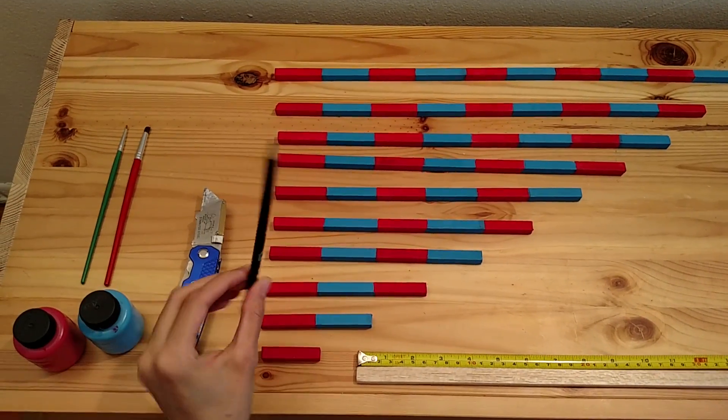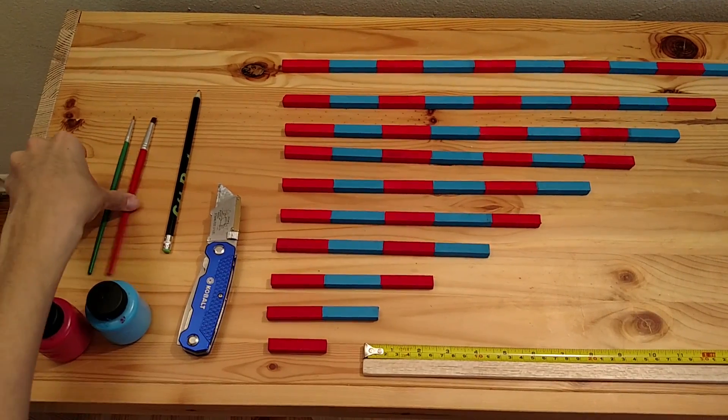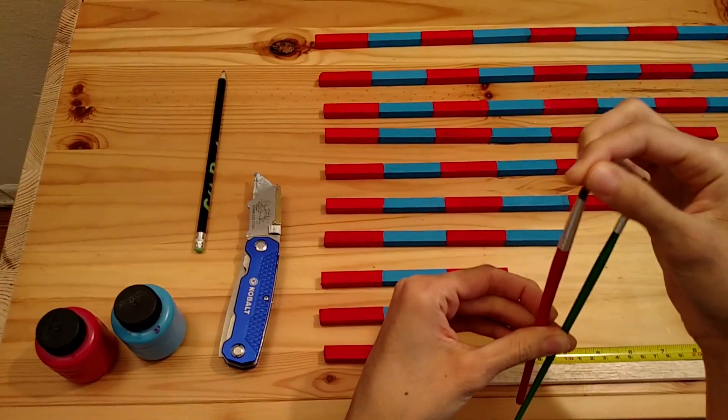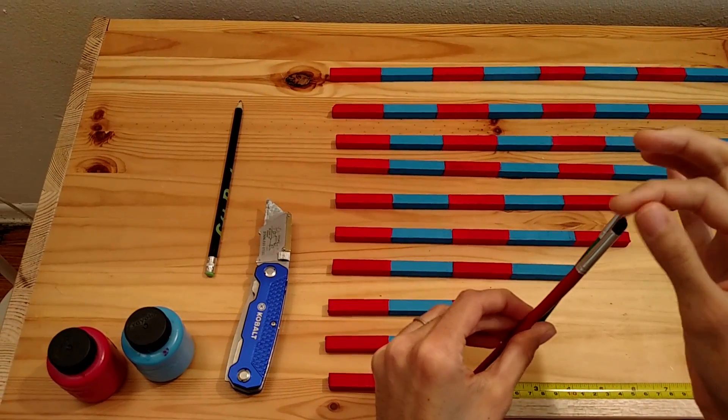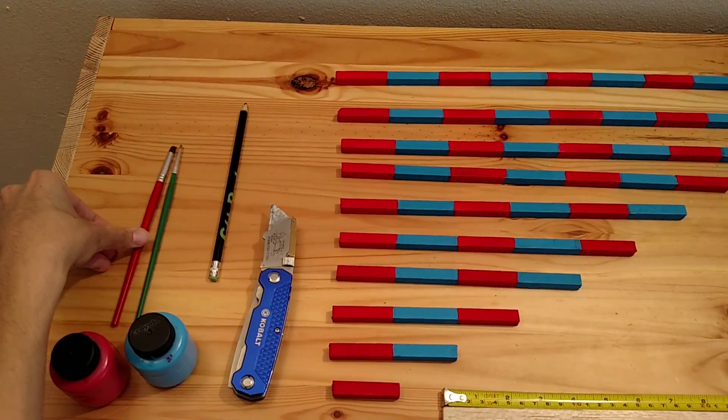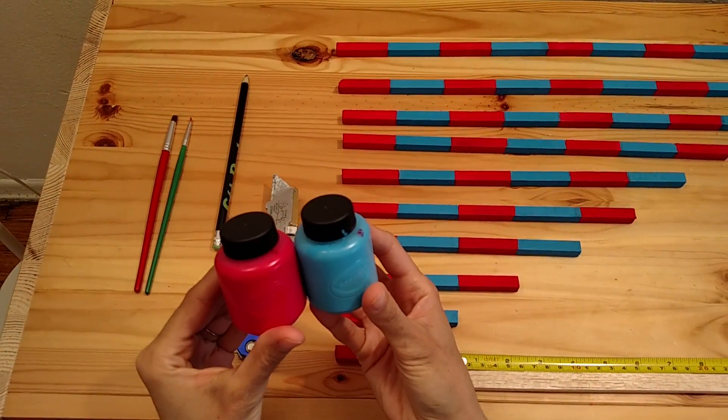Here are the supplies that you will need. You will need a pencil, a utility knife, some paint brushes—one that has a skinny tip and maybe one that has a wider tip. You will need some acrylic paint; I got some red and blue.